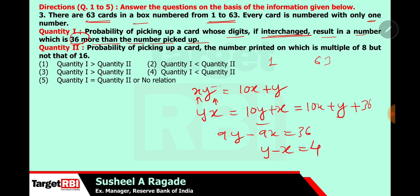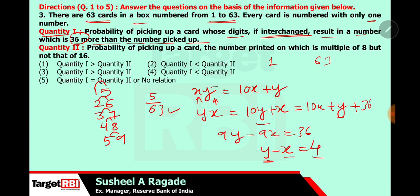So y is the unit place digit and y is greater than x, with a difference of 4. We can list: 15, 26, 37, 48, 59 — there are 5 such numbers. Why? Because the difference between the two digits must be 4. Therefore the probability is 5/63. Why 5/63? Because there are 63 total numbers but only 5 fulfill our condition.